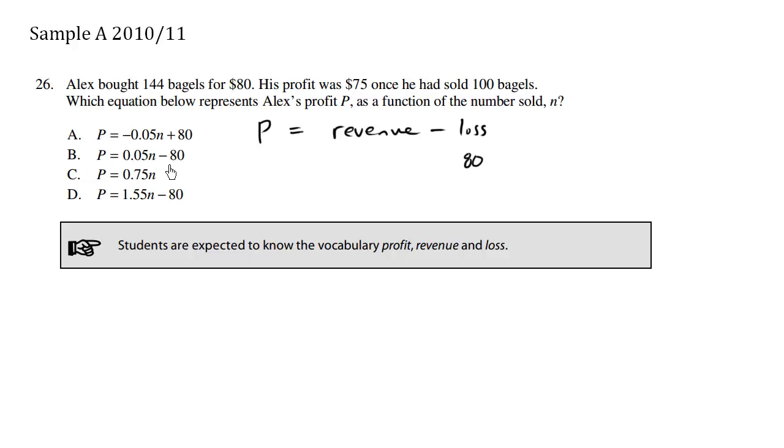So already I see the formula coming about, minus 80. It could be B or D. Now what is revenue? Revenue is based on how much money we make, which depends on the cost of a bagel times how many bagels we sell.